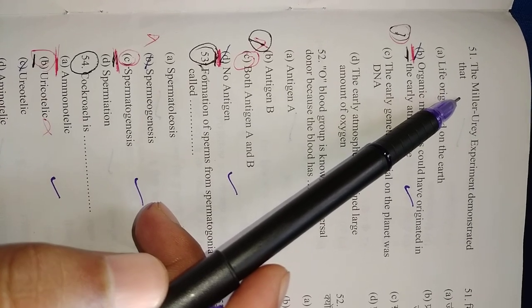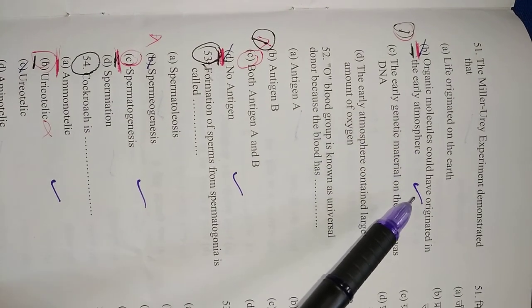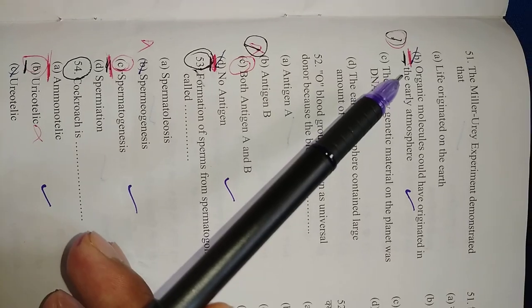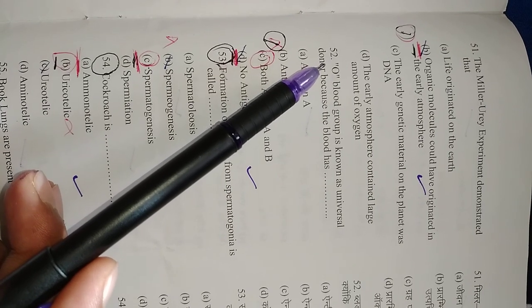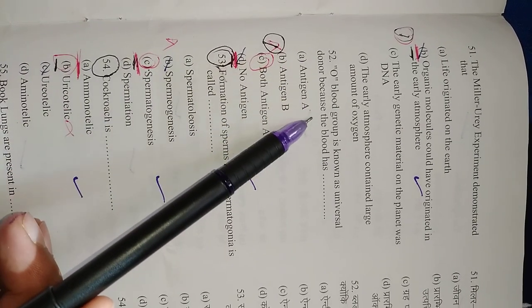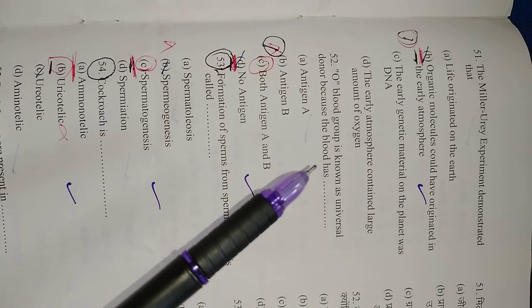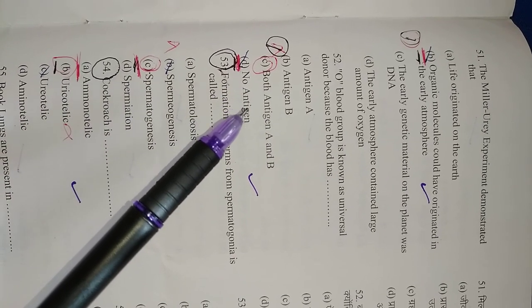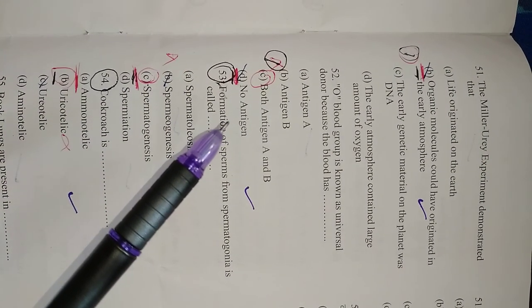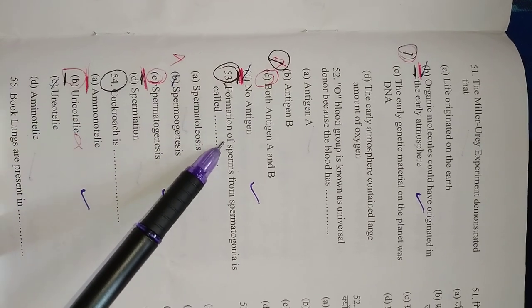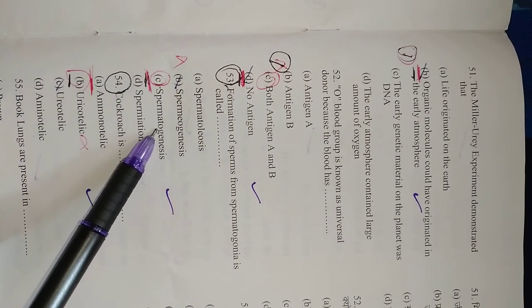Question number 51: Miller and Urey experiment demonstrated that organic molecules could have originated in the early atmosphere. So right option is B. Question number 52: O blood group is known as the universal donor because the blood doesn't have any antigen. So right option is D, they don't have any antigen, so they can give blood to anyone. Question number 53: Formation of sperms from the spermatogonia is called spermatogenesis. So right option is C.